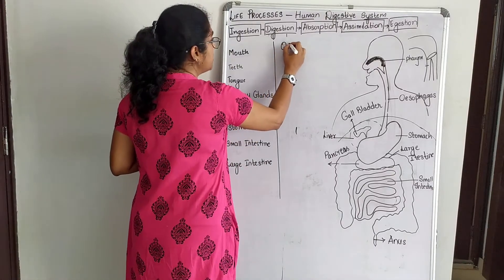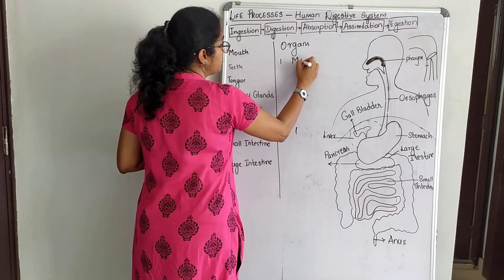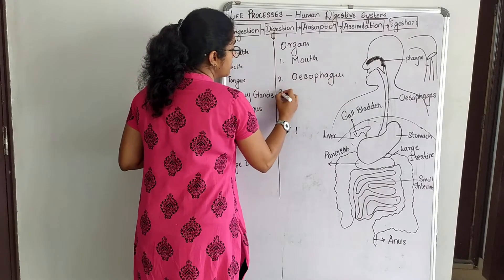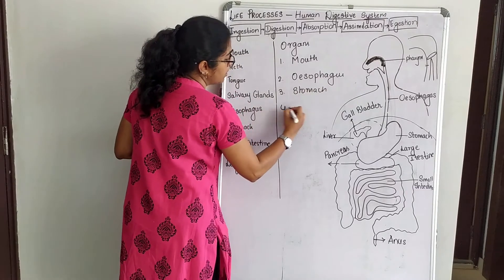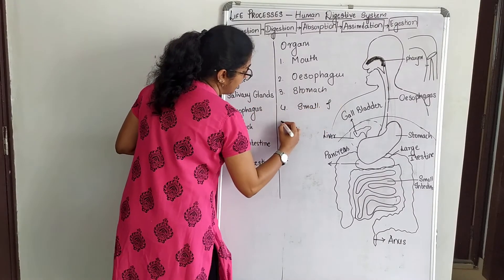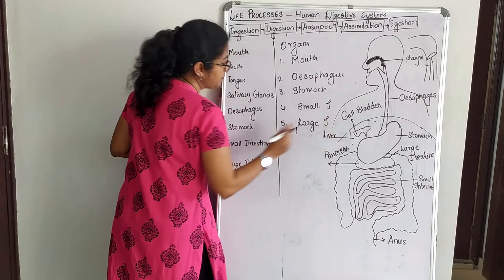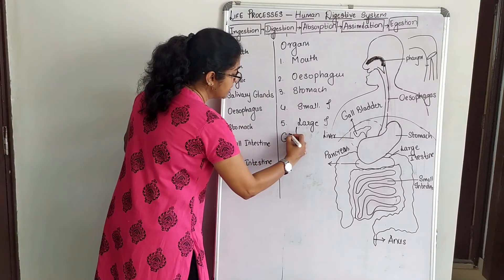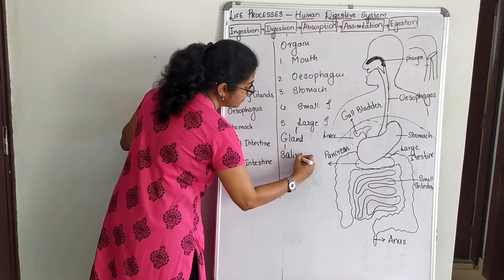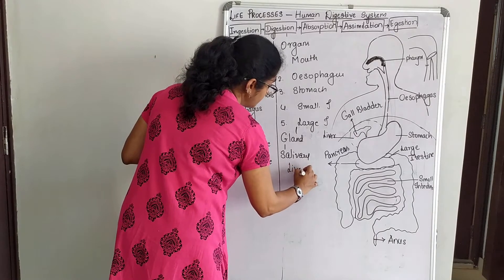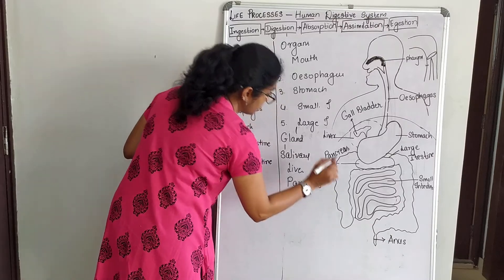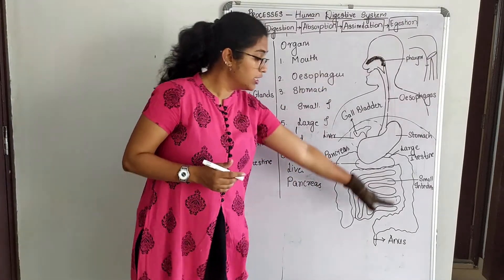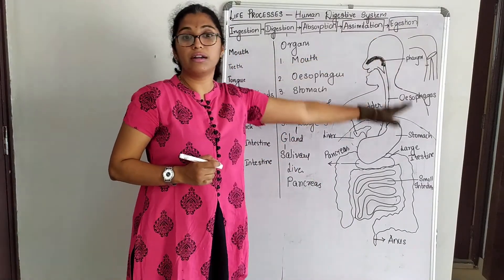The organs involved in the human digestive system are: first, the mouth; esophagus; stomach; small intestine; and large intestine. Together, these organs are called the human alimentary canal. It also involves certain glands such as salivary glands, liver, and pancreas. These glands and organs help in the digestion process. The long tubular structure from the mouth to the anus is called the human digestive system or alimentary canal.